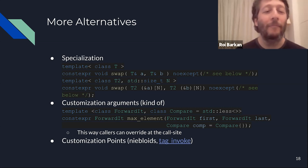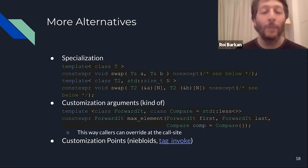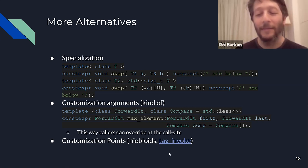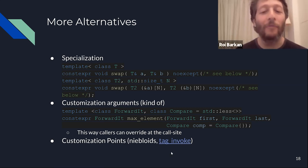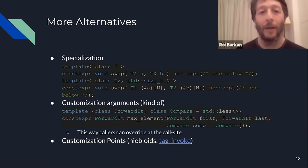A more complicated and more powerful way is using customization points — a much larger topic. There's a link to a tag invoke method, which is becoming a quite powerful way to let library writers interact with library users and let them customize various pieces of the algorithms they run.